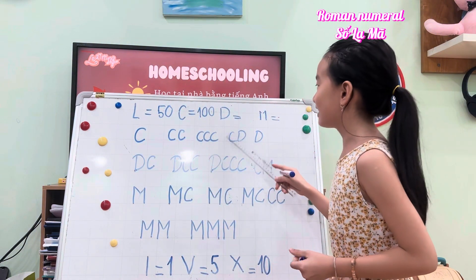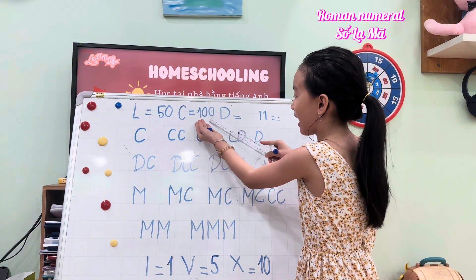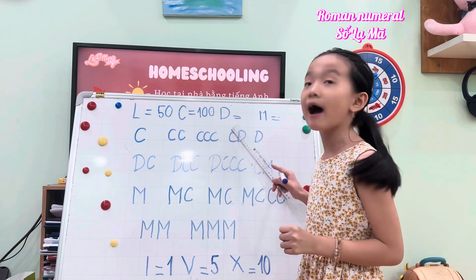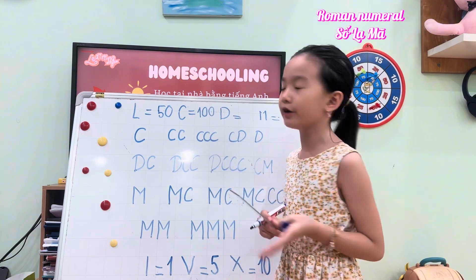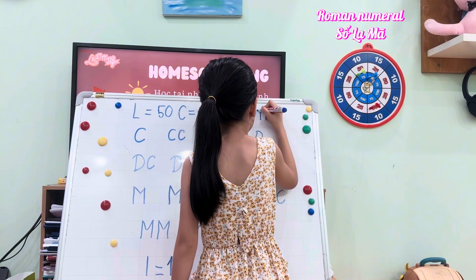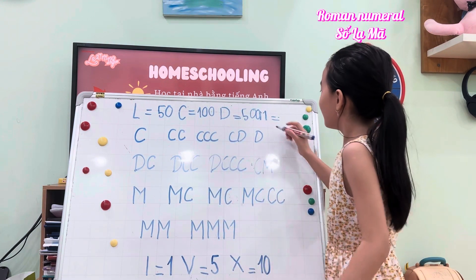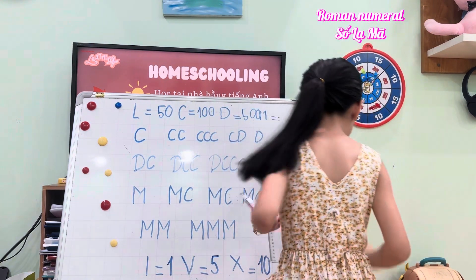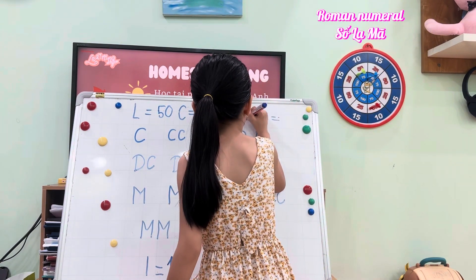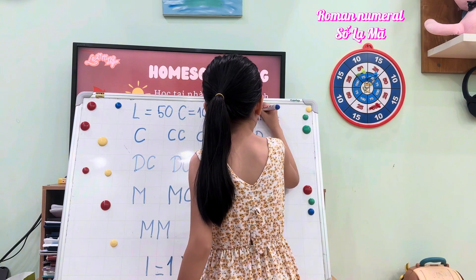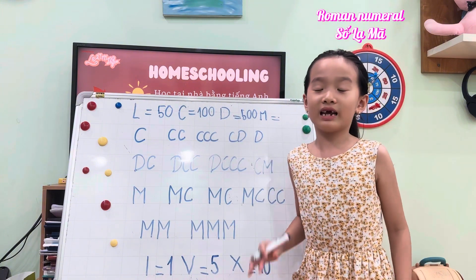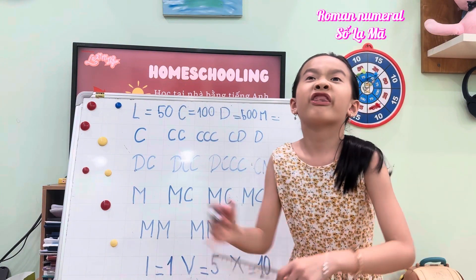D equals 500. So D would equal 500. Let me write it again — it is too big. Okay, so 500. M would be, M would equal 1,000.